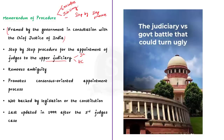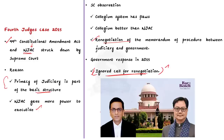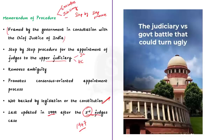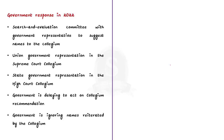Interestingly, the Supreme Court made an observation in the fourth judges case: the collegium system is not without flaws and needs reform. For the smooth functioning of the appointment process, the Supreme Court asked for the renegotiation of the memorandum of procedure with the government. But the government was angry at the judiciary for declaring the NJAC as unconstitutional and the memorandum of procedure was not renegotiated. But right now, the union law minister is asking for renegotiation.